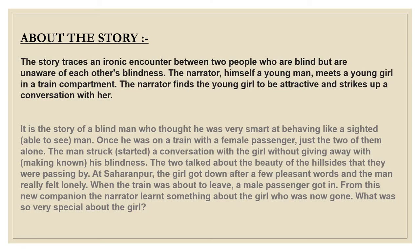About the story: The story traces an ironic encounter between two people who are blind but are unaware of each other's blindness. The narrator himself, a young man, meets a young girl in a train compartment. The narrator finds the young girl to be attractive and strikes up a conversation with her.